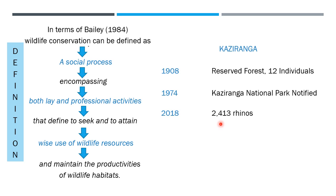Why are people so attracted to Kaziranga National Park? There are two basic reasons: one, Kaziranga holds 80% of the world's rhino population; and two, it is a place where we find the big five animals. This has been made possible by controlled burning of the grasslands — a very old practice believed to have been carried out for almost a century. Every year, around the end of January, when the grasslands become dry, the forest department practices controlled burning.